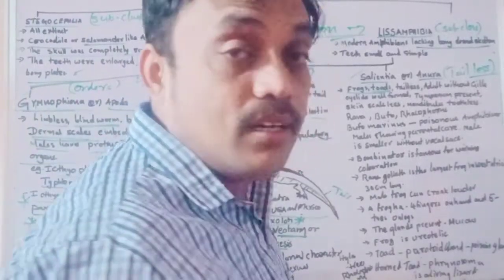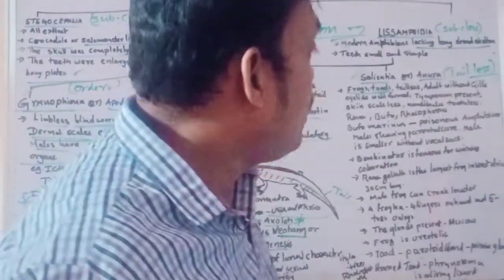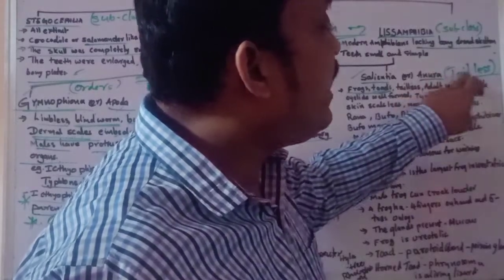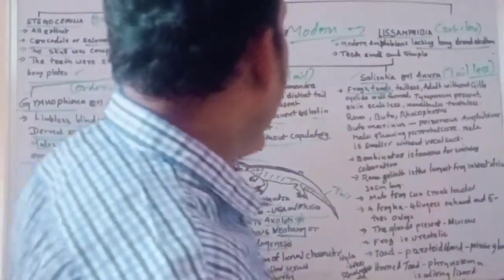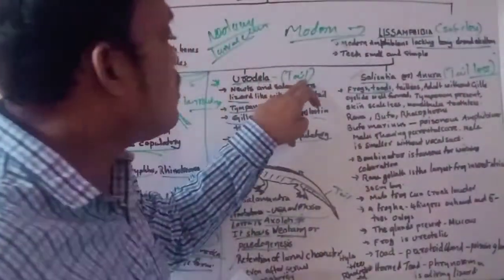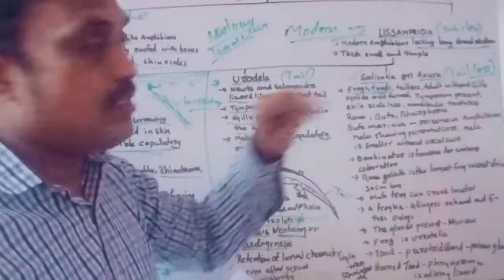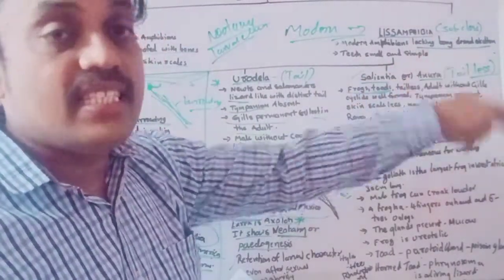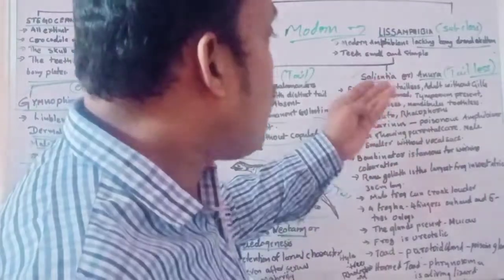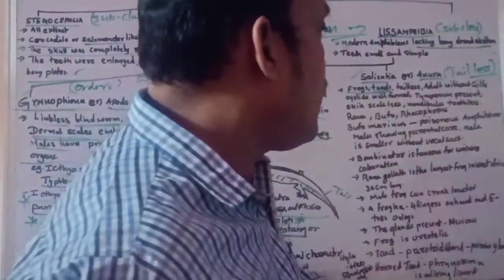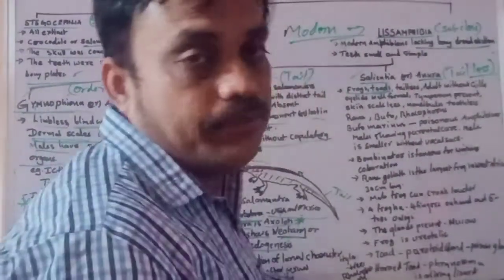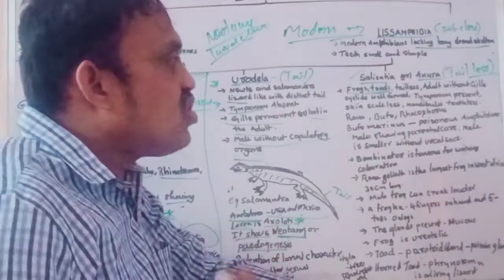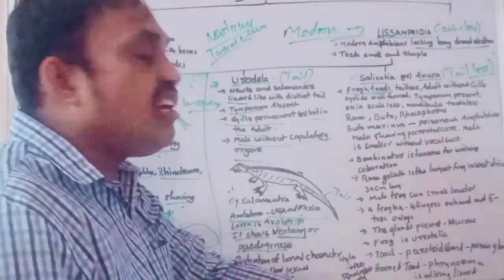Urodela are tailed amphibians; Salentia/Anura are tailless amphibians. Frogs and toads are examples of Salentia. The characteristics of Salentia/Anura: they are tailless, and adults are without gills.